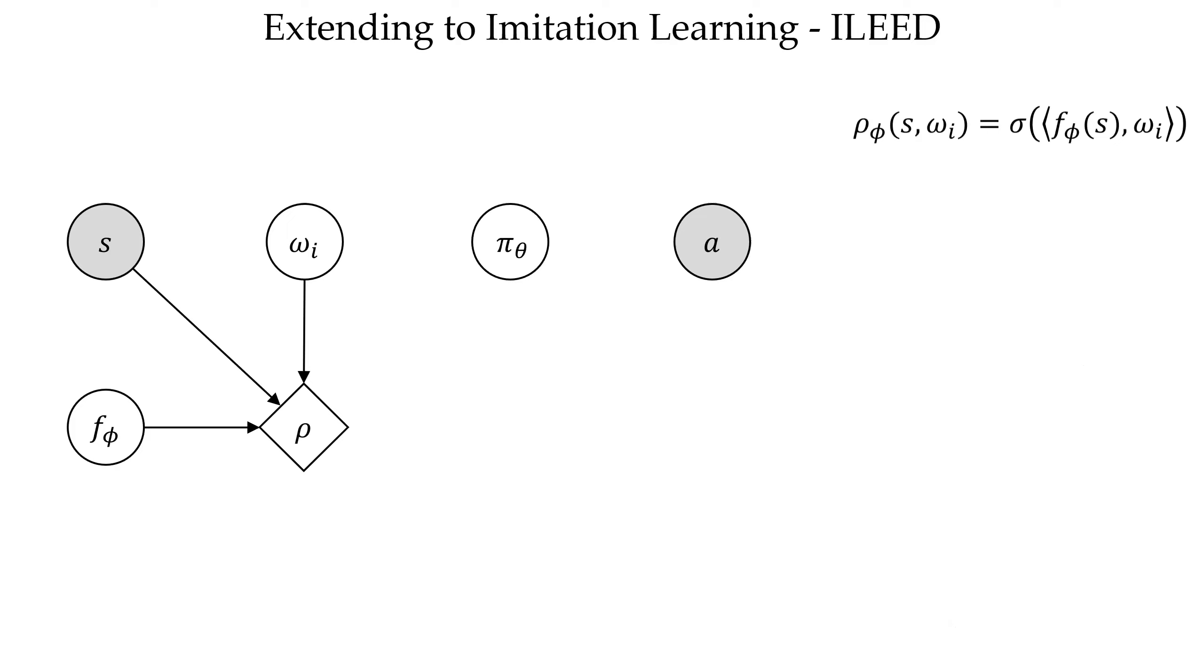We parametrize our learning policy with theta, where our main goal is to recover the optimal policy. Given that pi theta is the estimate of our optimal policy, and the fact that expertise rho tells us how likely a demonstrator will act optimally, we can define the demonstrator policy.